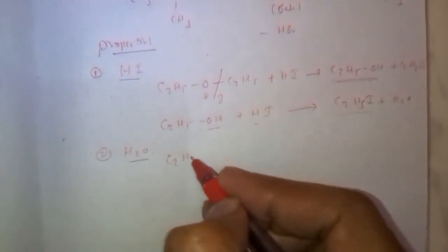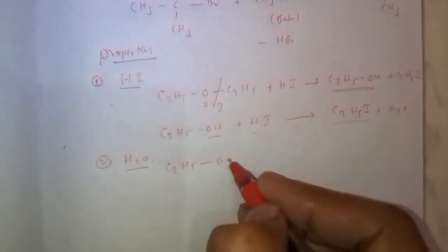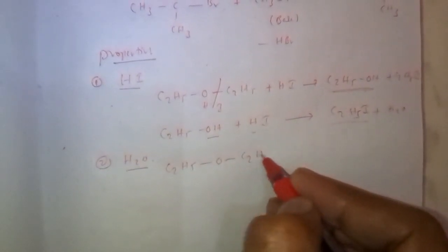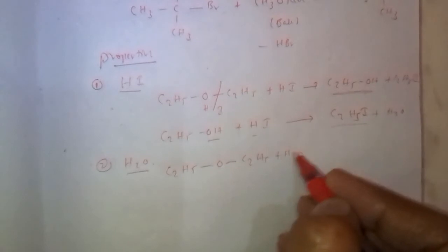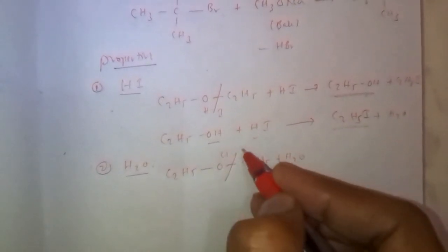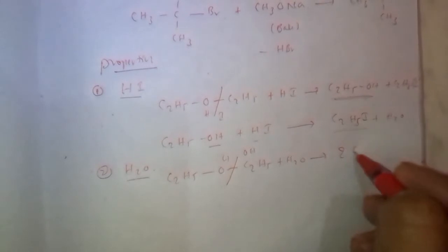Next, hydrolysis. Ethers on hydrolysis form alcohols. This bond is broken, hydrogen attaches with oxygen, OH attaches with C2H5, then it converts to two moles of ethyl alcohol.